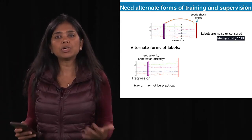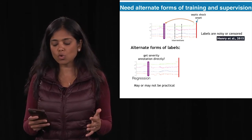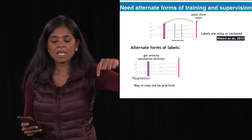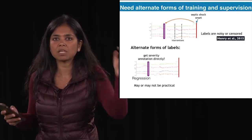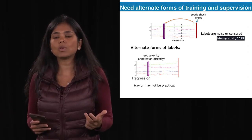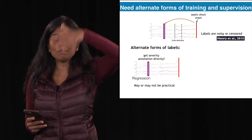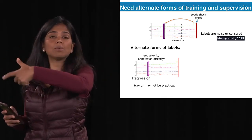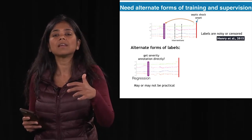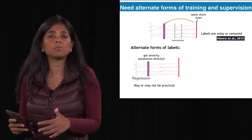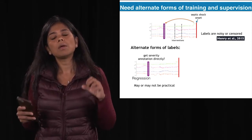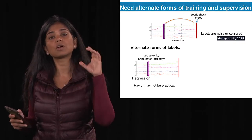In machine learning terms, you have your predictive window, your label, and interventions in the middle. One way to think about this is that the interventions in the middle are corrupting your label — you don't have a pure label, you have a corrupted, noisy, or censored label. In cases where the patient gets treated in the middle, you're not getting the true label. If a patient was treated and never experienced death, it's not because they wouldn't have died if left untreated — it's that we're not seeing the true outcome: what would have happened had we done nothing.